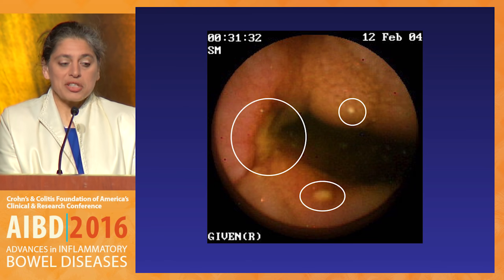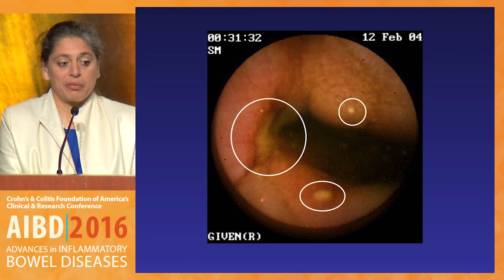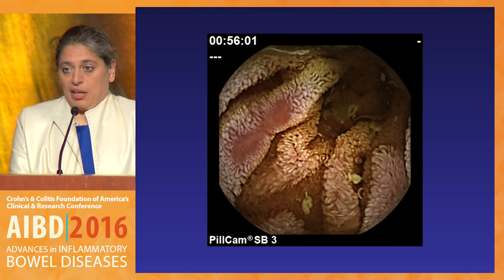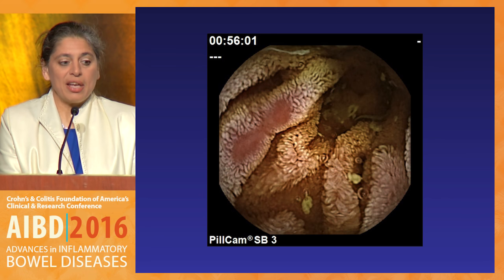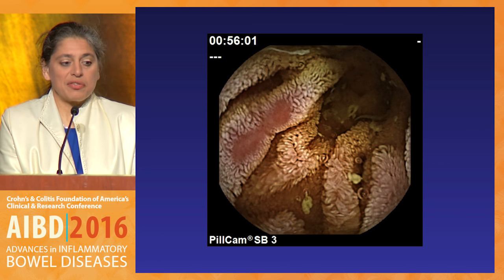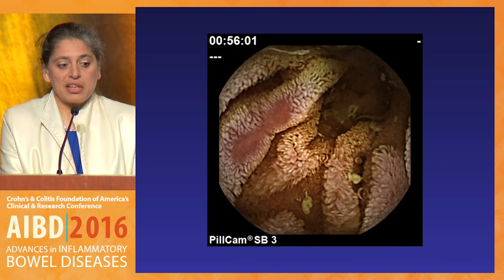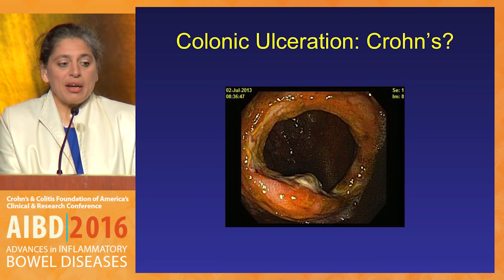We ended up doing a balloon enteroscopy study for tissue diagnosis, but if you saw this you would certainly think it could be Crohn's. Don't get fooled — you always have to ask the patient what they put in their mouth. This is another capsule finding that can confuse a lot of people: a prominent villus with some patchiness and areas of denuded mucosa. This is a very non-specific finding, and in this patient it turned out to be early celiac disease, not Crohn's.